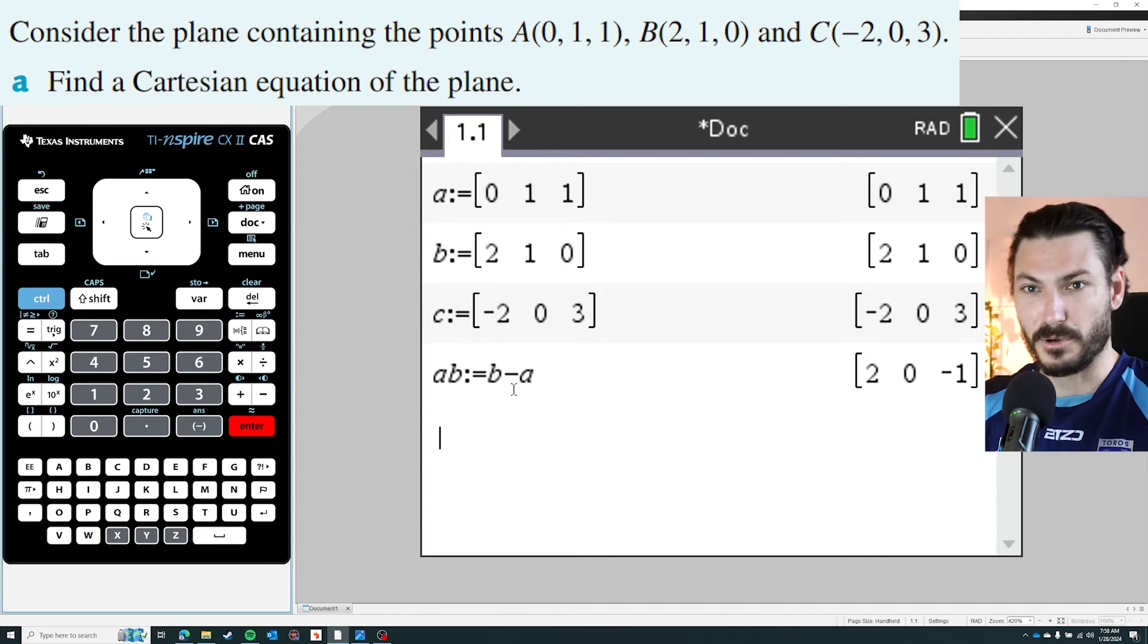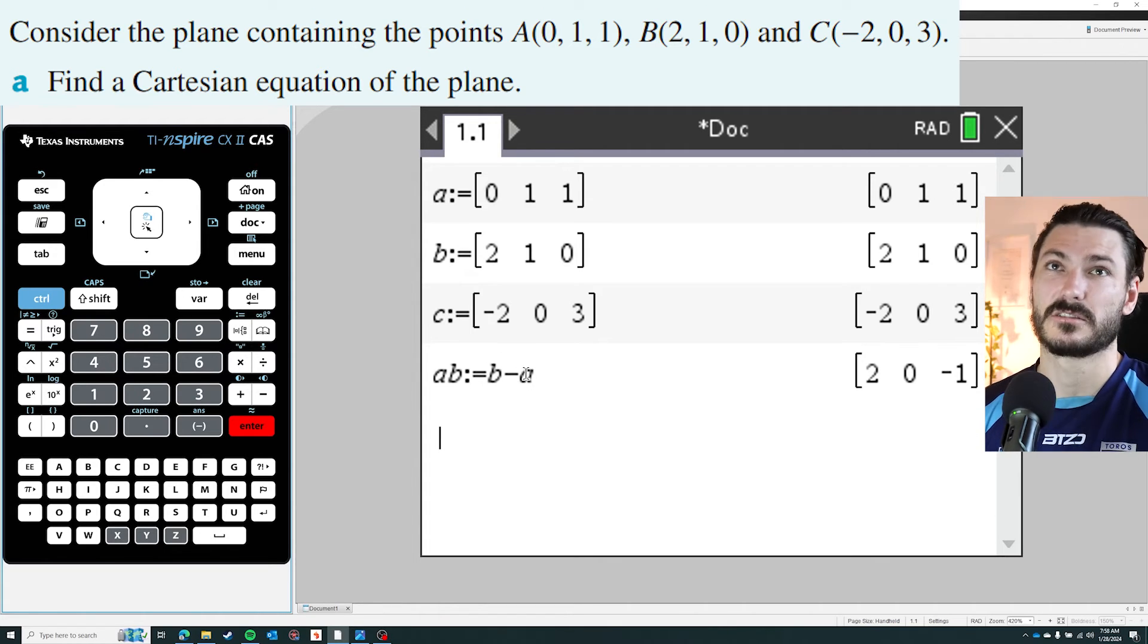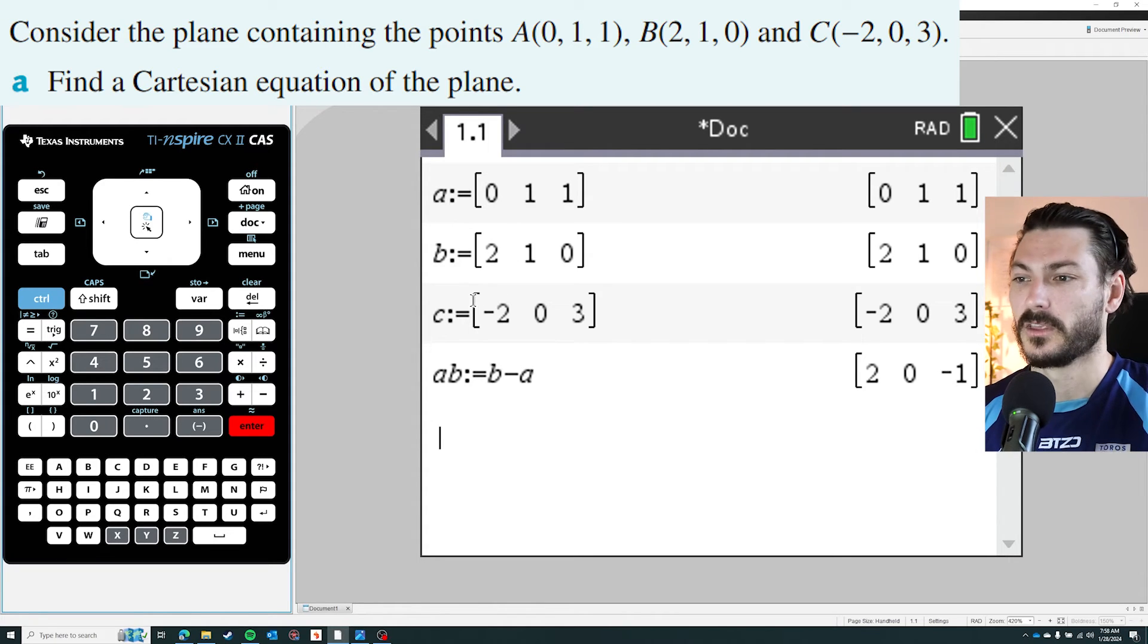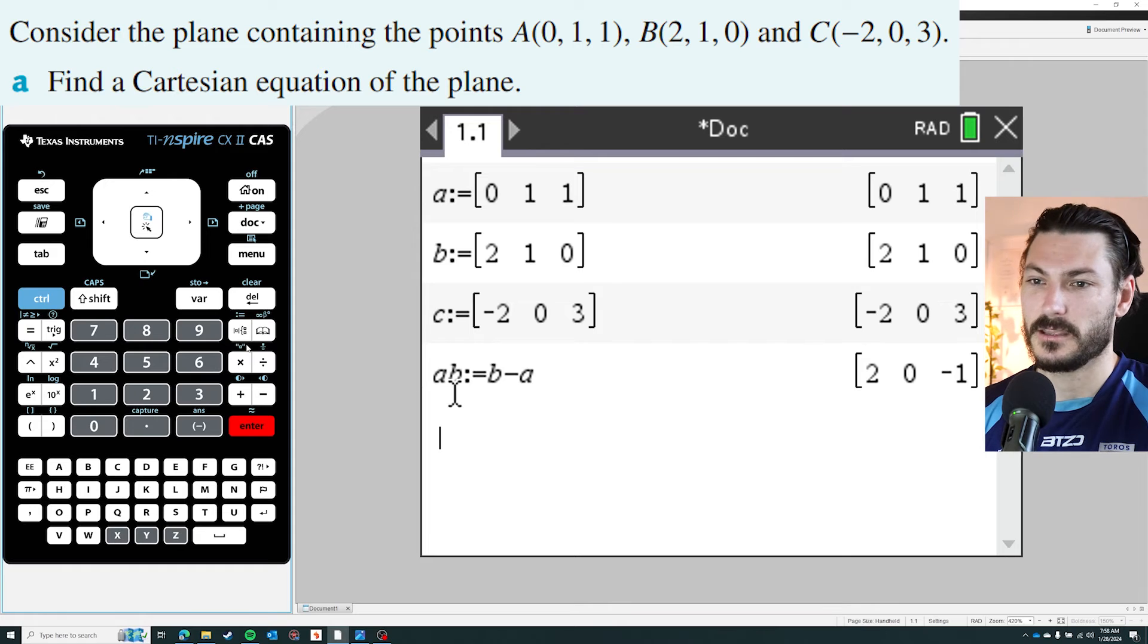So you can just use the letters in order to represent the vectors. You don't have to type them in over and over and over which is time consuming. So b minus a is the vector AB, and similarly AC is going to be defined as c minus a.